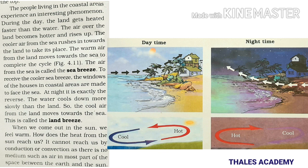The air from the sea is called the sea breeze. To receive the cooler sea breeze, the windows of the houses in coastal areas are made to face the sea. At night it is exactly the reverse — the water cools down more slowly than the land, so the cool air from the land moves towards the sea. This is called the land breeze.